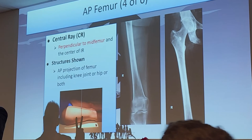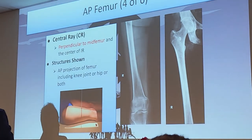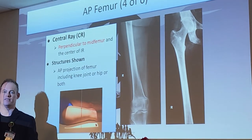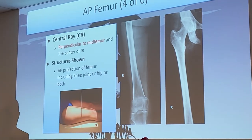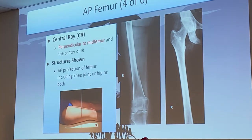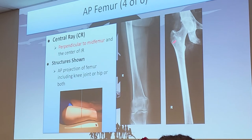For both views — both the upper and lower AP femur — the central ray is perpendicular to the mid-femur. We include the entire femur along with either the hip joint or the knee joint, depending on which portion we are visualizing. On the lower, the epicondyles are parallel; on the upper, the femoral neck is in profile.